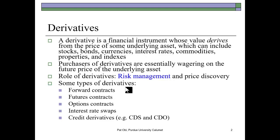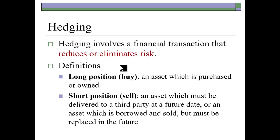Some underlying assets and examples of derivatives are shown here. These include forward contracts, futures, options, interest rate swaps, and a variety of credit derivatives. A couple of these are explained in this presentation. Derivatives are typically used to reduce or eliminate risk, making them an important instrument in risk management.